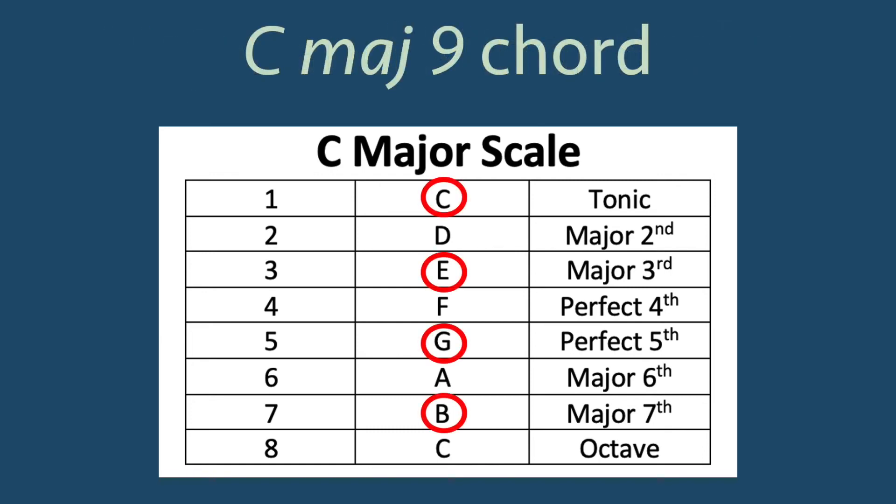For example, the C major 9 chord is made up of the tonic, major 3rd, perfect 5th, major 7th, and then one more note on top, the 9th.